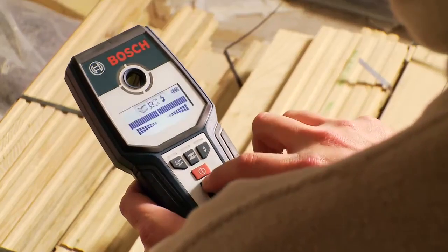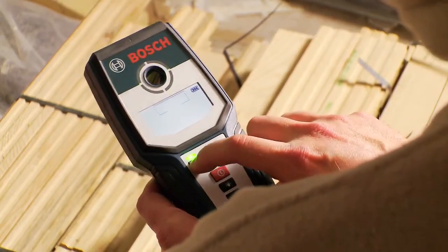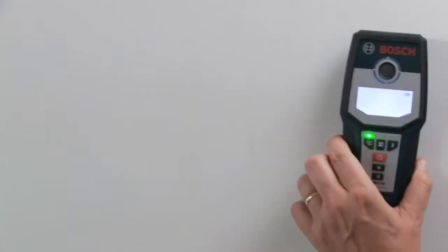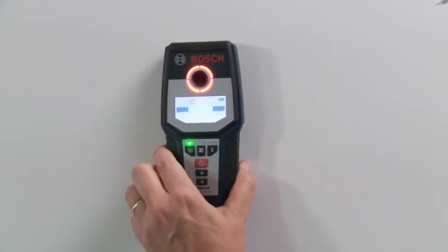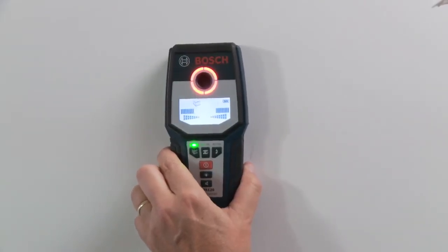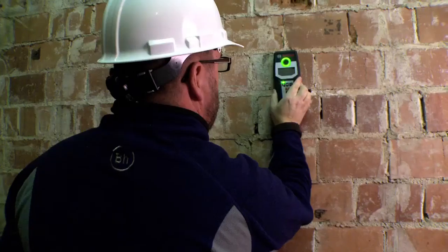The GMS120 provides easy-to-view and understandable information. The large illumination ring changes color to green for no object found, orange for object near, red for object found within sensor range.